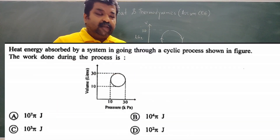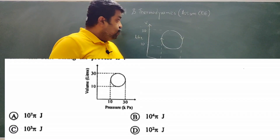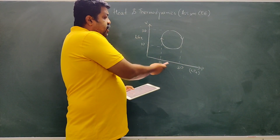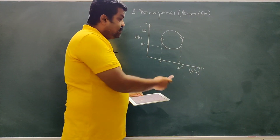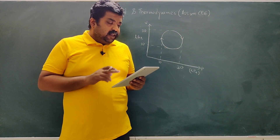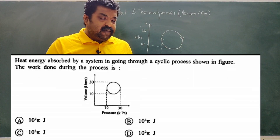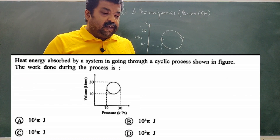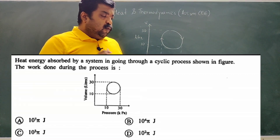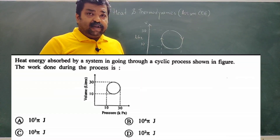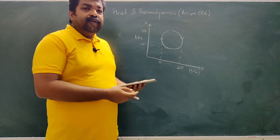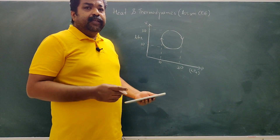The next question is Assam C 2017. We are given a PV graph showing a cyclic process. Volume ranges from 10 to 30 liters and pressure ranges from 10 to 30 kilopascals. The work done in the cyclic process equals the area enclosed by the cycle on the PV diagram.